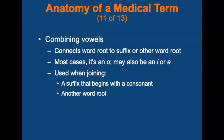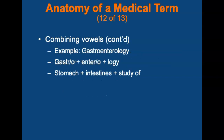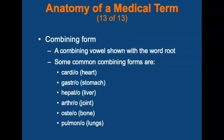There are also combining vowels. A combining vowel is the part of a term that connects a word root to a suffix or another word root. In most cases it is an 'O,' however it may also be an 'I' or an 'E.' For example, 'gastroenterology' breaks down as: stomach plus intestines plus the study of. The combining vowel helps ease the pronunciation of the term. A combining form is a combining vowel shown with the word root. Some common combining forms are: 'cardio' meaning heart, 'gastro' meaning stomach, 'hepato' meaning liver, 'arthro' meaning joint, 'osteo' meaning bone, and 'pulmono' meaning lungs.